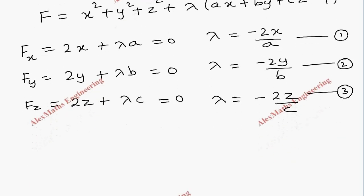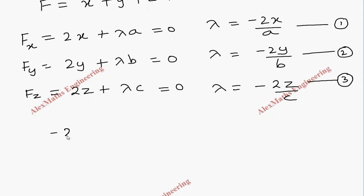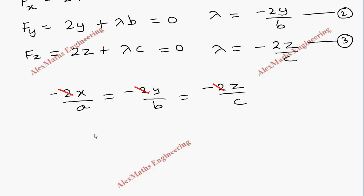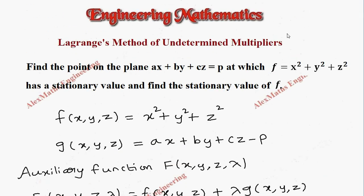Now let's equate all three lambda expressions: minus 2x by a equals minus 2y by b equals minus 2z by c. Everywhere we have minus 2, and that can be cancelled. So the remaining terms give us x by a equal to y by b equal to z by c.